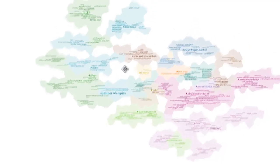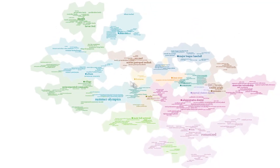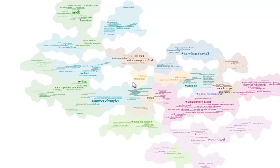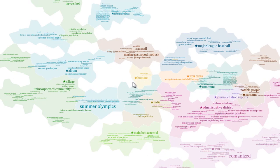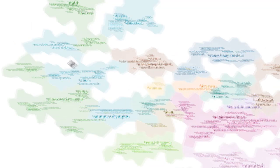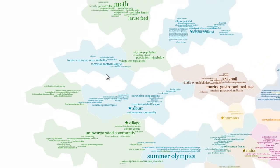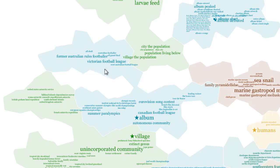Semantic interaction is a method that tightly couples the visual encoding of the visualization with the user interaction. The approach enables users to integrate their domain expertise into the visualization by directly manipulating the information within the visual metaphor itself, from which the analytical reasoning is inferred and recast into the system's data model.